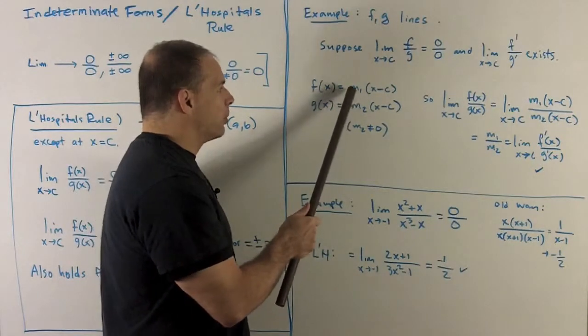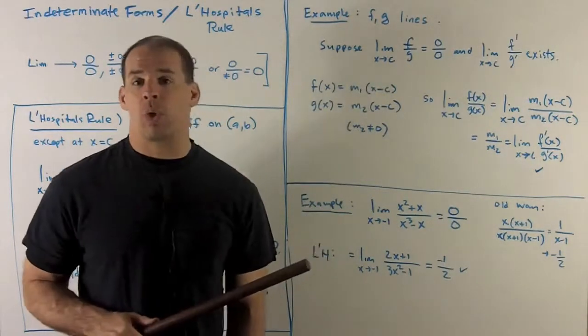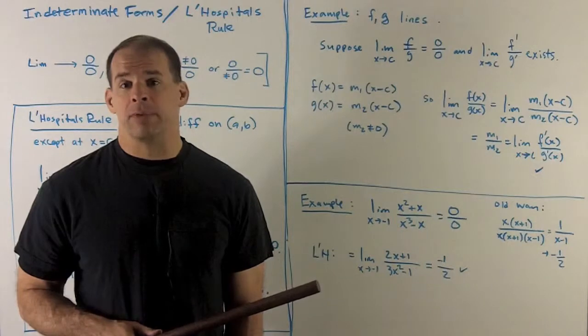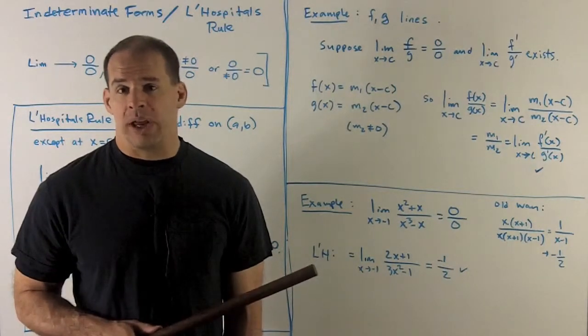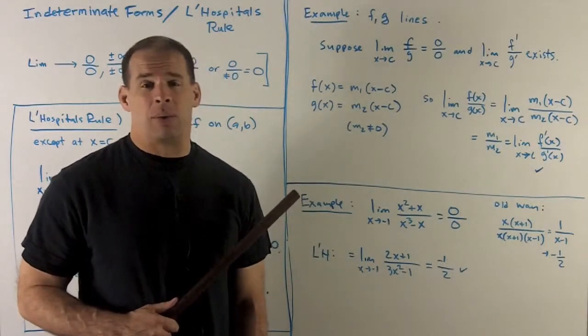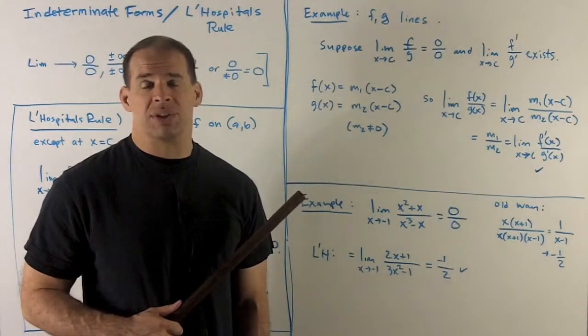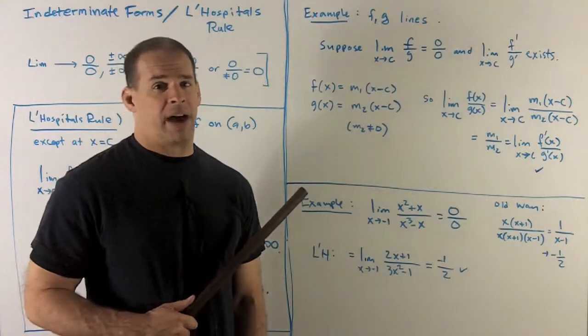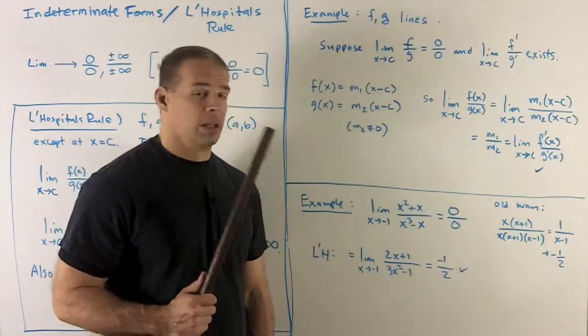They're lines, so note if I push the m through, I get something of the form mx plus b for both. So these are definitely equations of lines. I'll assume m2 is non-zero, so that way when we take the limit for the derivatives, I won't be dividing by 0 in my final result. Let's take a look.